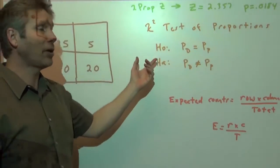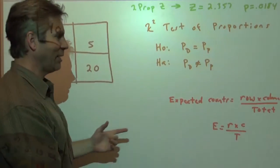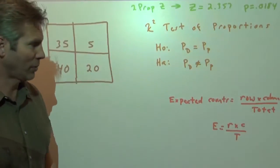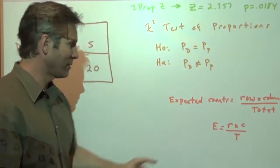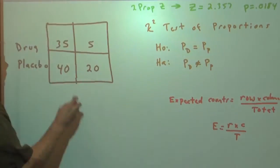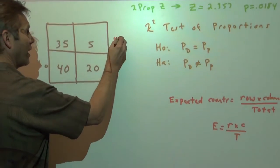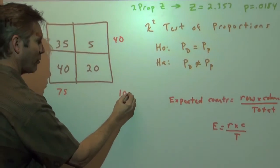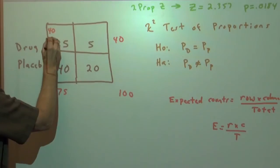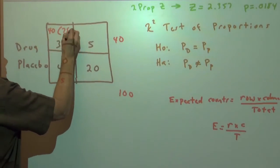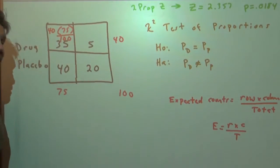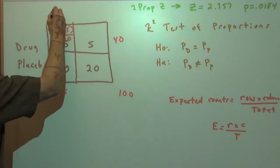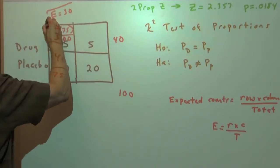Chi-squared test of proportions, same null, same alternative. To find expected counts in each cell, we're supposed to take the row total times the column total divided by the grand total. So we can see this is the formula right here. If we take the row total of 40 times the column total of 75 and divide it by the grand total of 100, then we're taking 40 times 75 divided by 100.